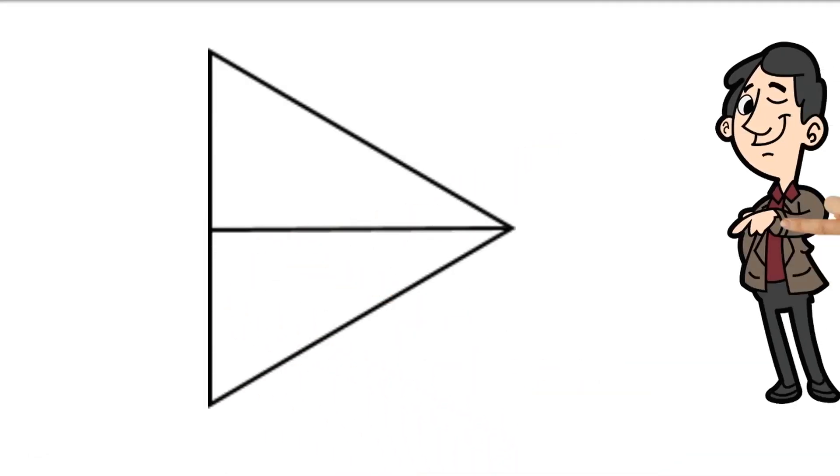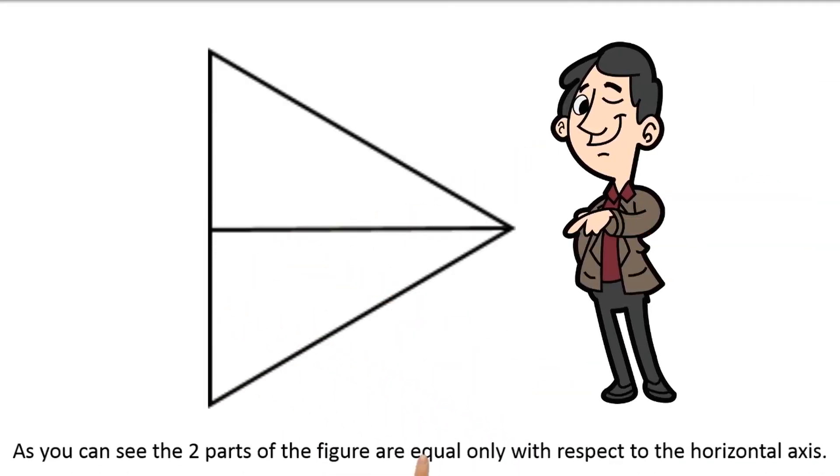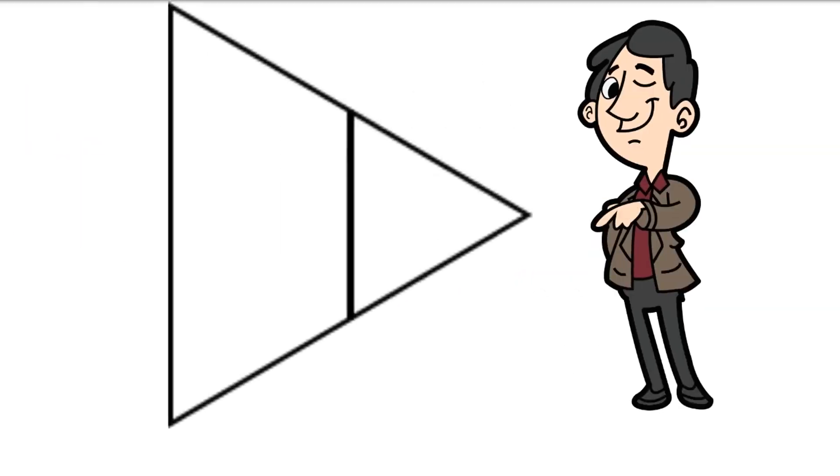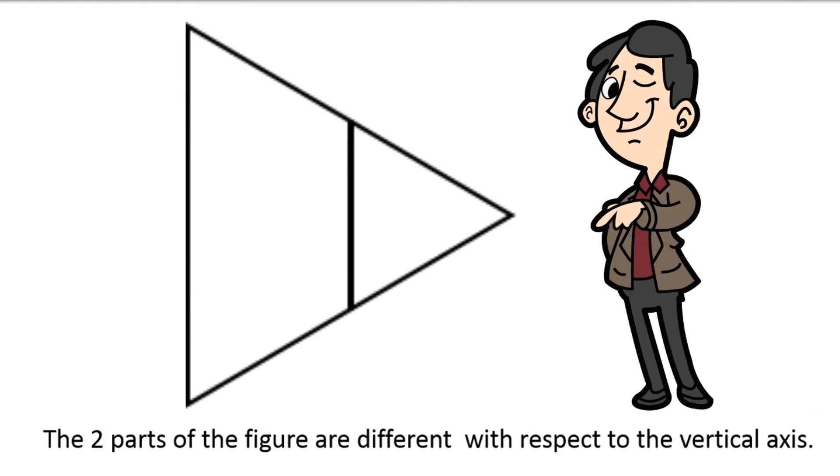As you can see, the two parts of the figure are equal only with respect to the horizontal axis. The two parts of the figure are different with respect to the vertical axis.